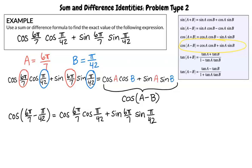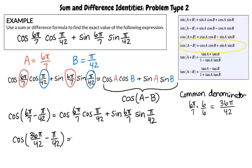Now we must simplify 6π/7 - π/42. We need a common denominator. To do this, we multiply 6π/7 by 6/6 to get a common denominator of 42. This simplifies to 36π/42. So cos(36π/42 - π/42) simplifies to cos(35π/42).